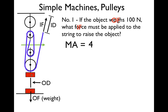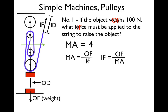Now we can do the problem. We're going to use our mechanical advantage equation that has the forces in it — the output force divided by the input force. We know the output force and we know the mechanical advantage, so we solve for input force: IF equals output force divided by mechanical advantage. The output force is 100, the mechanical advantage is 4, and 100 divided by 4 is 25. So to raise an object with a weight and output force of 100 newtons, we only have to apply 25 newtons of force to the string.